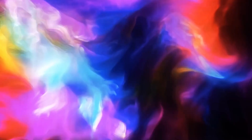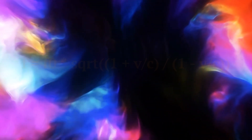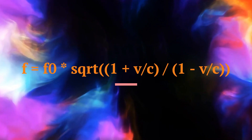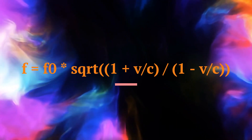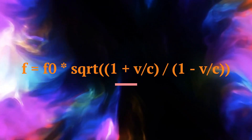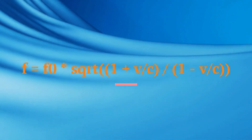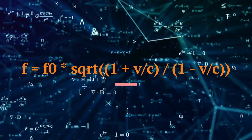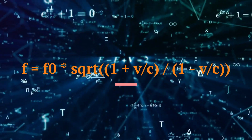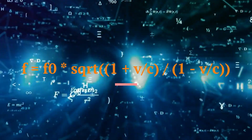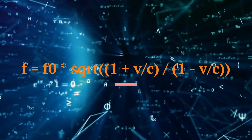This means that the light will be shifted more towards the blue end of the spectrum. This is also called a relativistic blueshift. The formula for calculating the relativistic blueshift is on the screen, where f is the observed frequency, f₀ is the emitted frequency, v is the speed of the observer, and c is the speed of light.